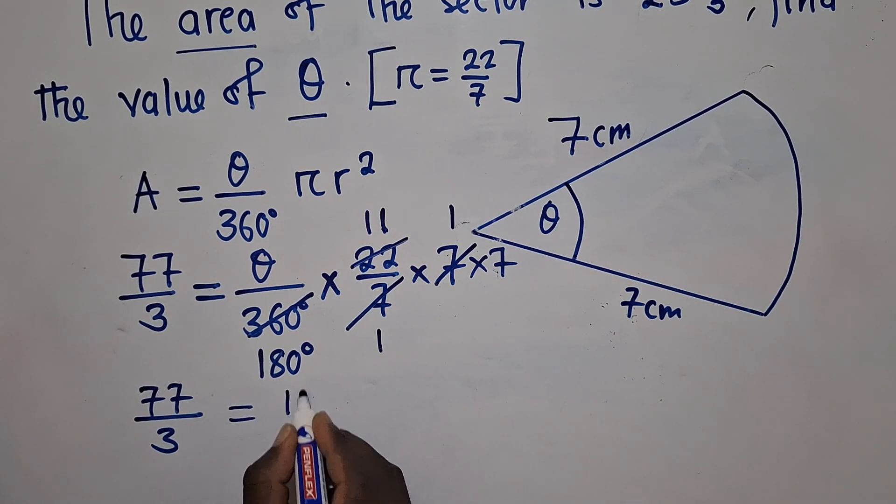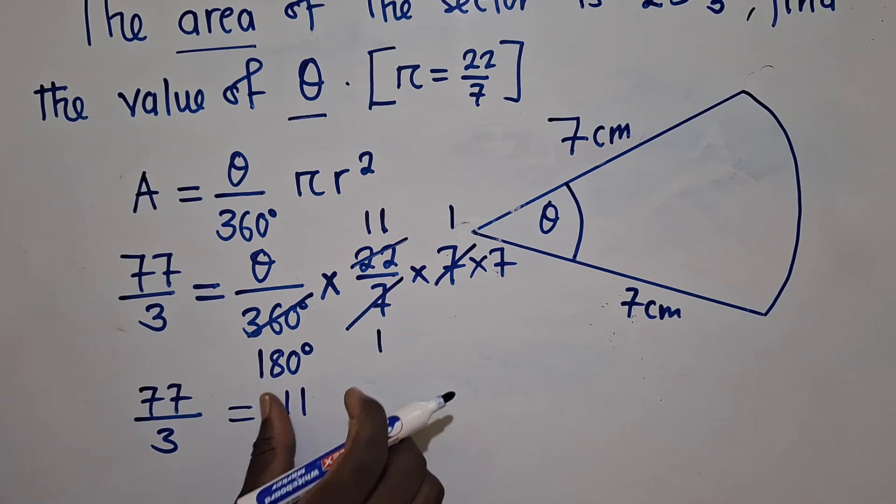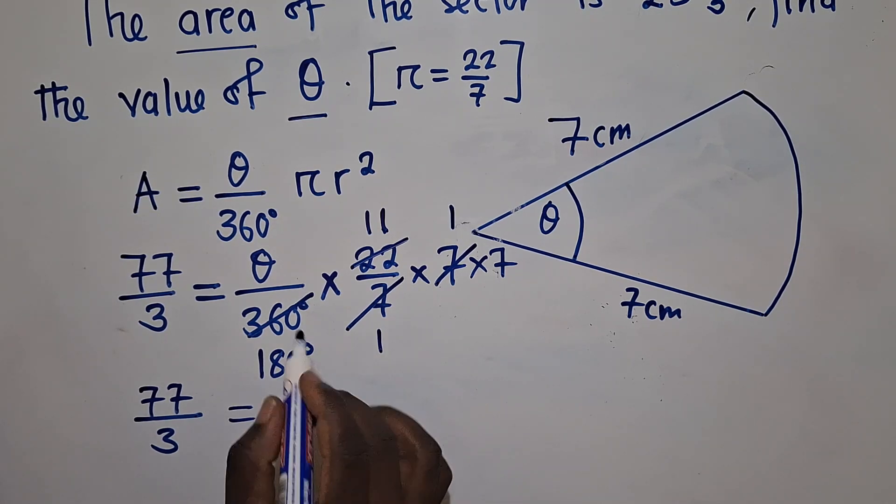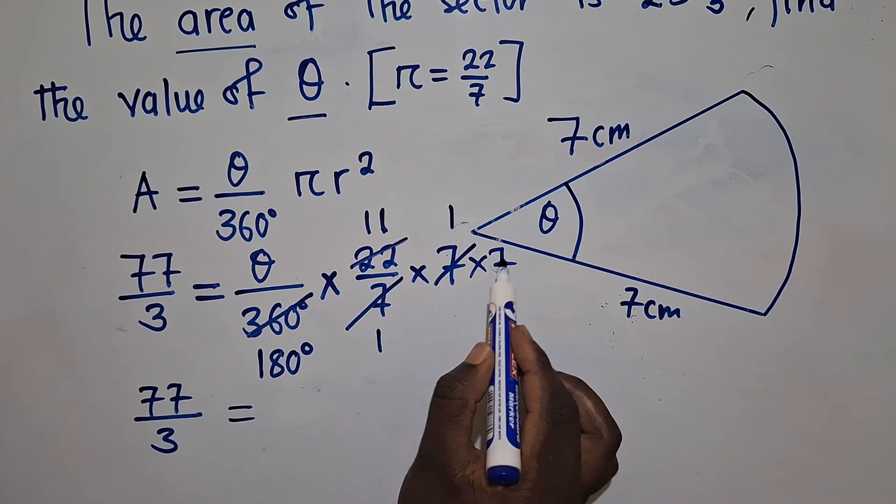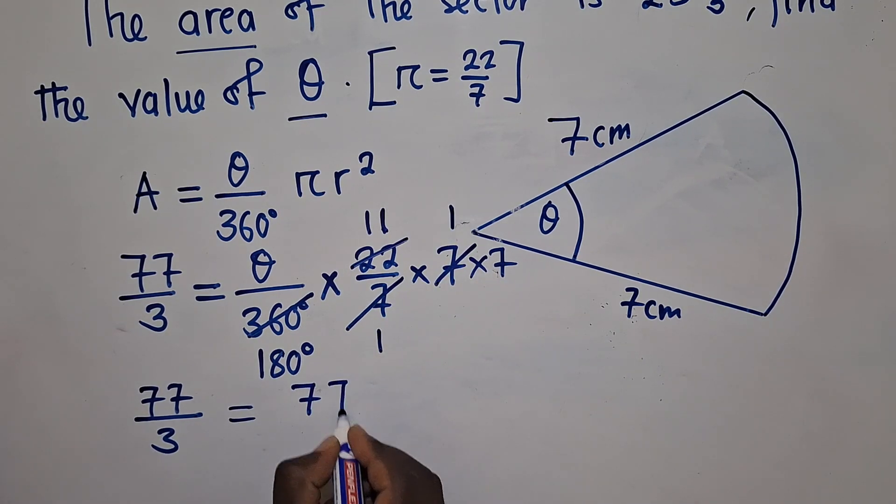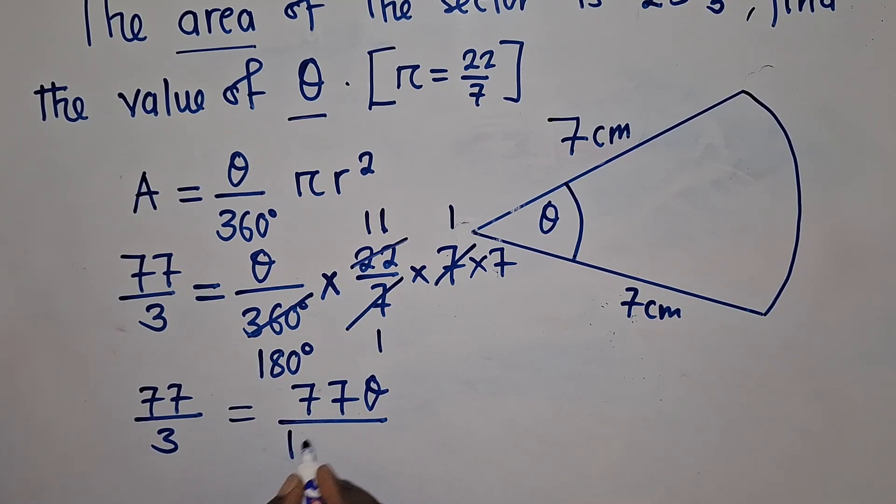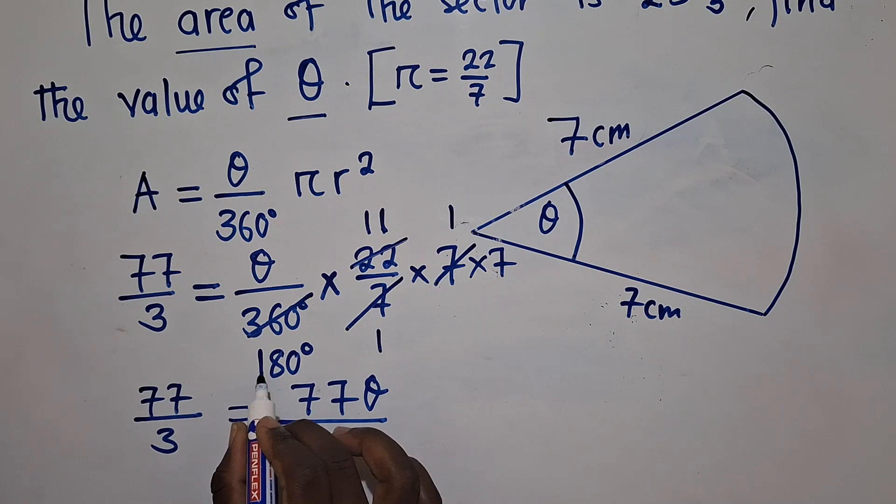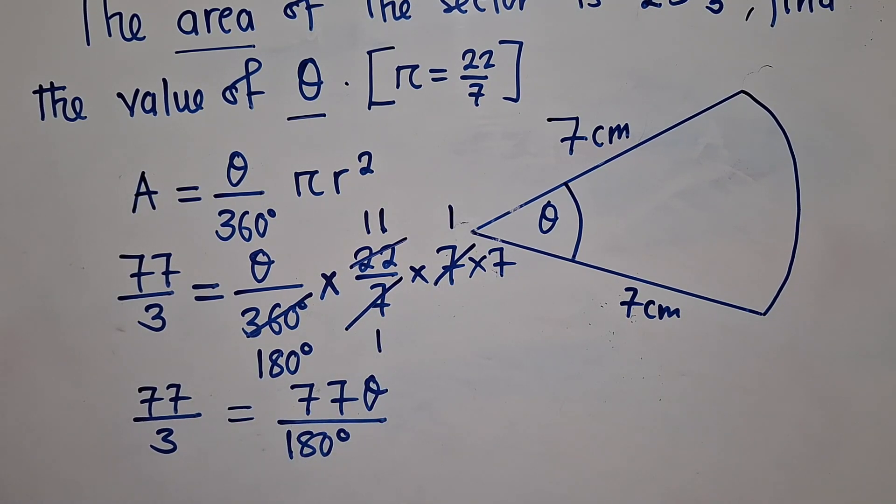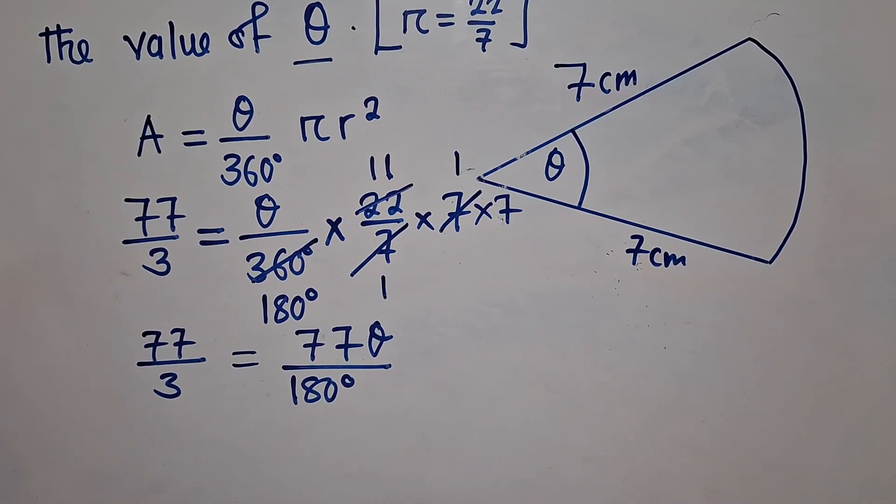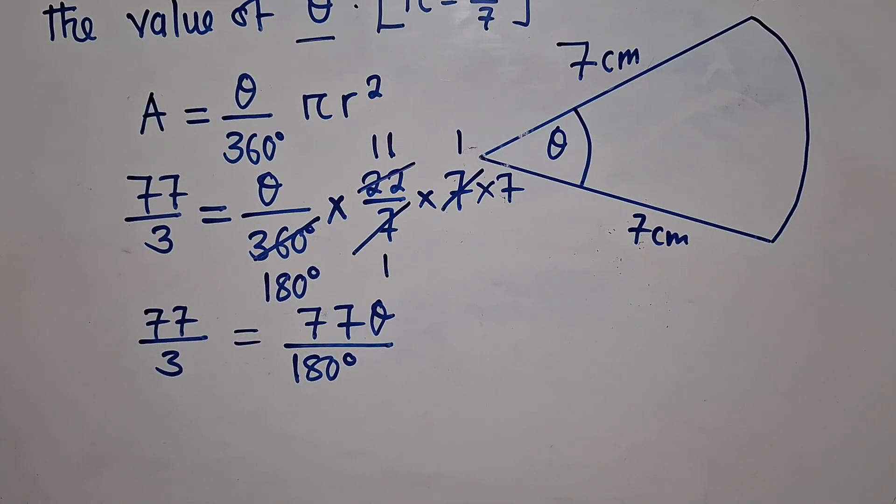So you see what we have. Let's clean up. We have 77/3 is equal to... Actually, let's do this, let's clean it up. So we have 11 × 1 × 7, that will give us 77 times theta, 77θ over 180°, because 180° times 1 will just give us the same.